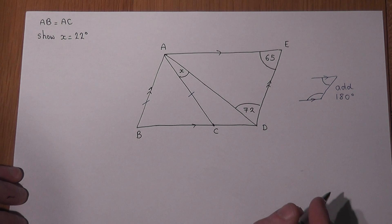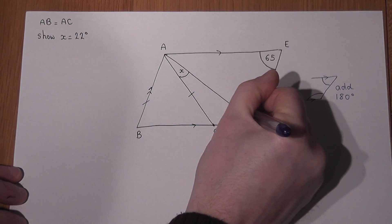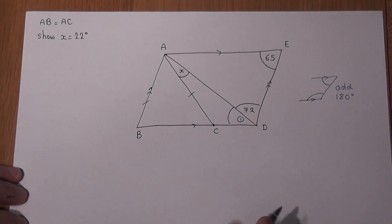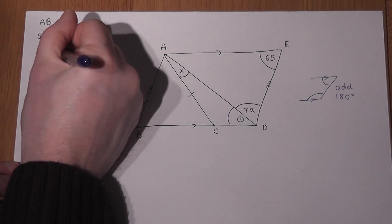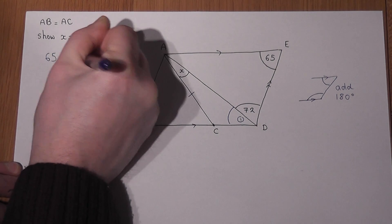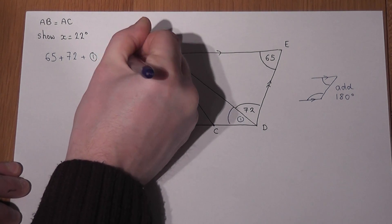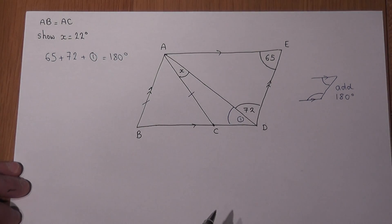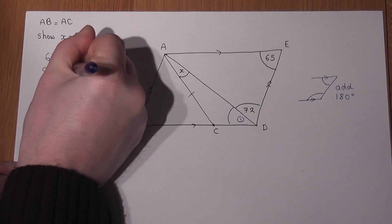Because 65 plus 72 plus this extra bit of angle here must equal 180 degrees. And if I write down here co-interior...